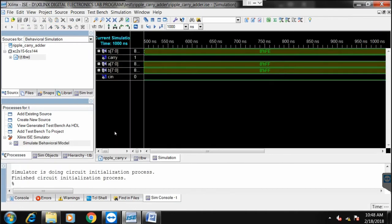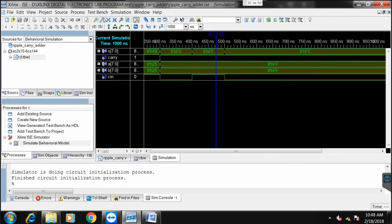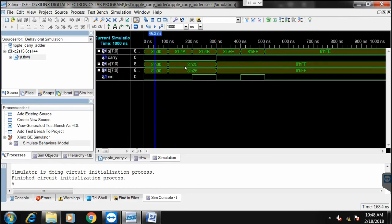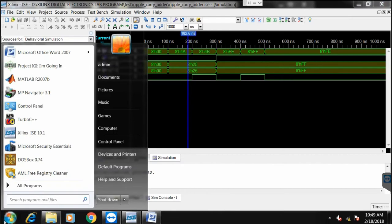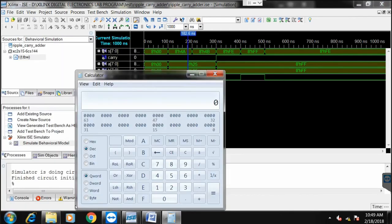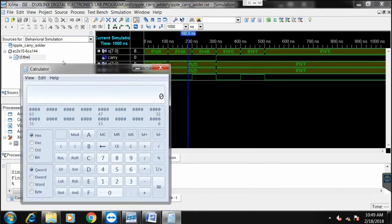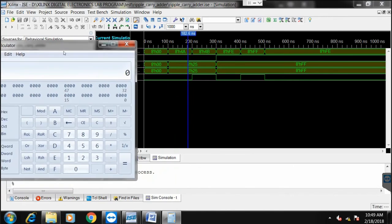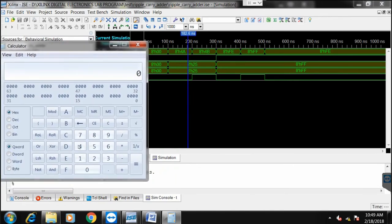Now we have got the output. Minimize the page and you can see 25 plus 25 is 4a. 25 plus 25 plus carry in is 4b. Ff plus ff is fe, and ff plus ff plus carry is 1ff. Use a calculator, go select the hexadecimal number, then type the values. 25 plus 25 gives 4a, so our output is correct. If we add carry to it, it will be 4b.